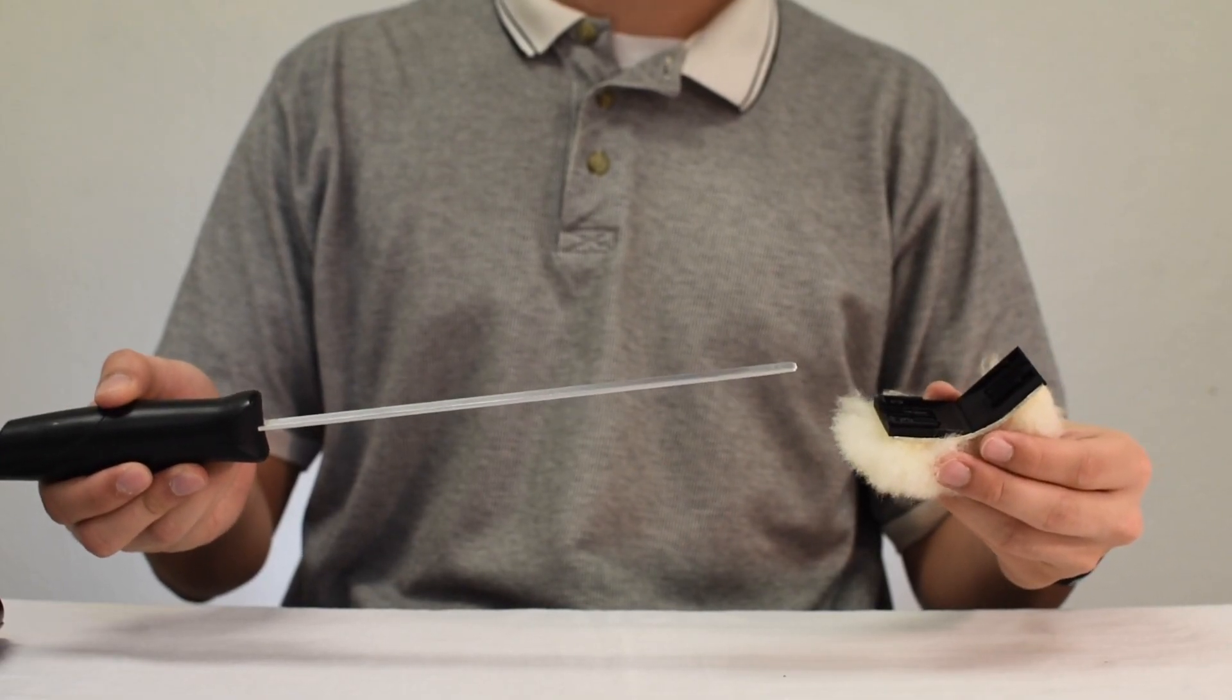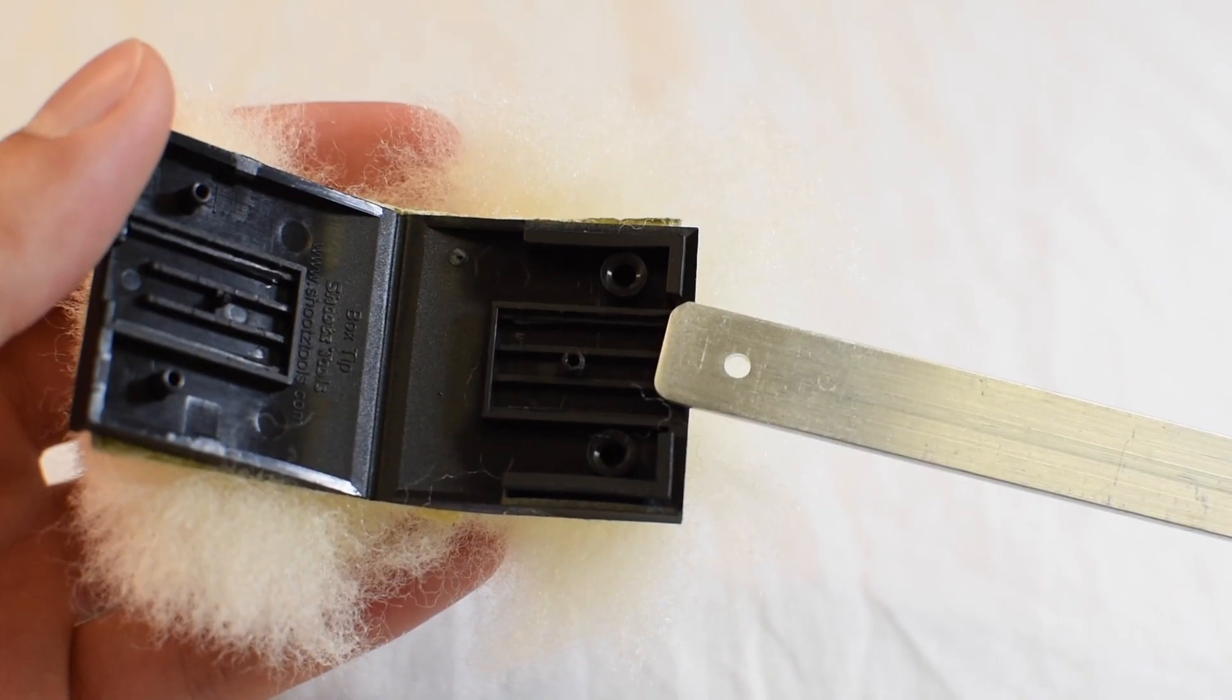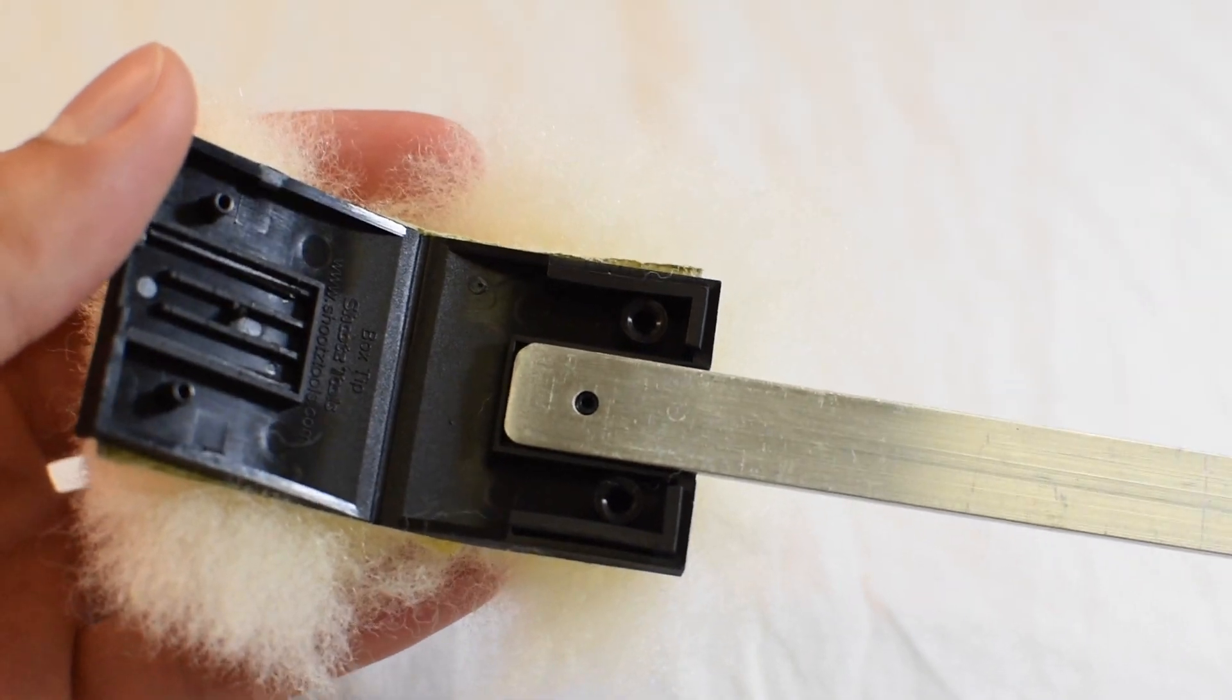First, insert the aluminum shaft into the black plastic tip. Line up the center hole in the aluminum with the black pin.